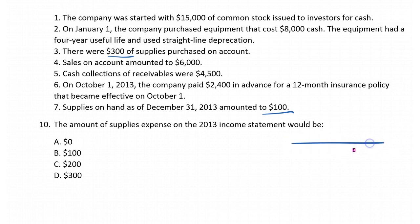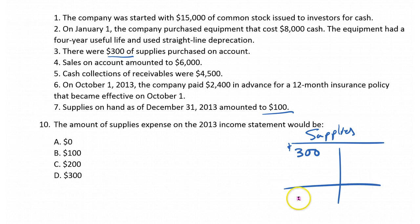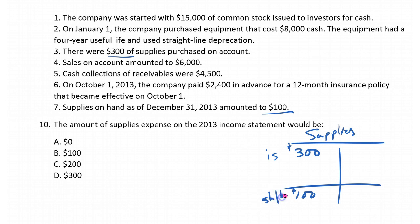If you were to look at this in a T-account, what we would have is a purchase of $300 of supplies, and at the end of the period we have $100. So our trial balance shows $300, but it should be $100. What are we going to do to reduce this account from a $300 debit to a $100 debit?